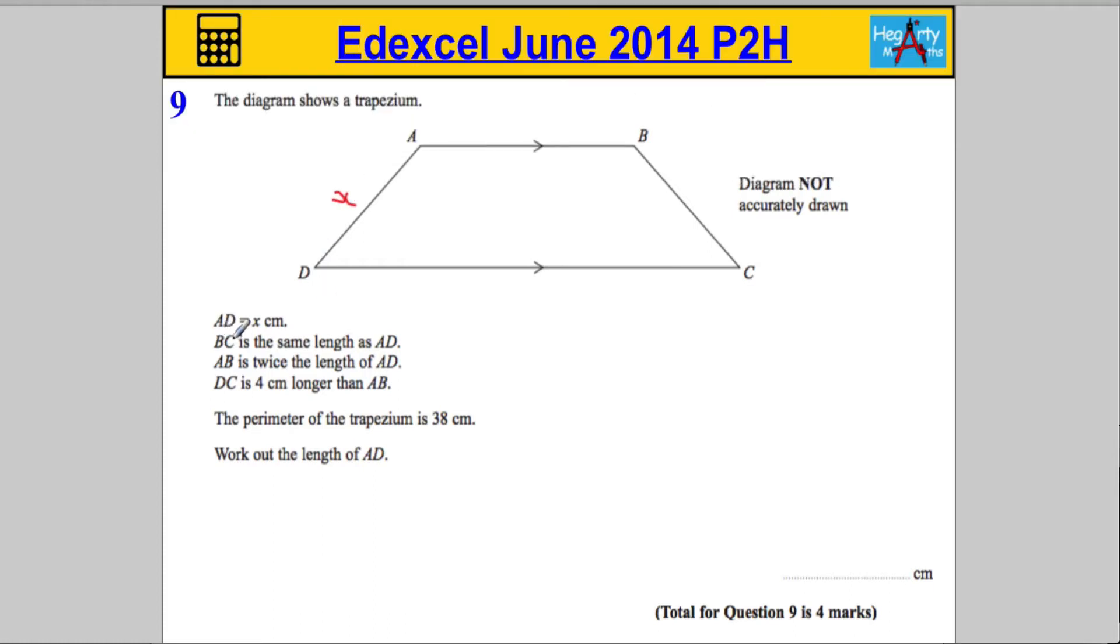We're told that BC is the same length as AD, well we know AD, it tells us BC is the same, so that must be X. We're told that AB is twice the length of AD, so this line up here, this side, is twice the length of this side, and if this is X, this has got to be 2X.